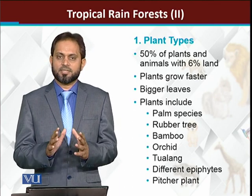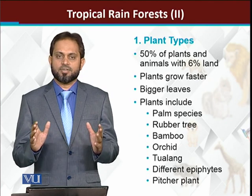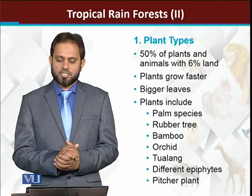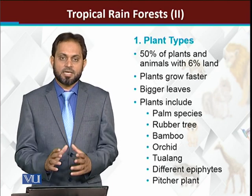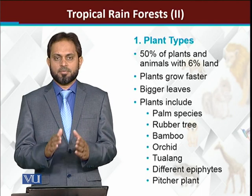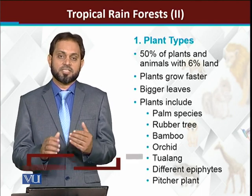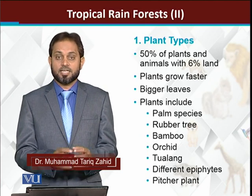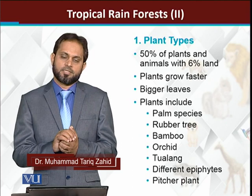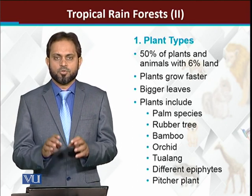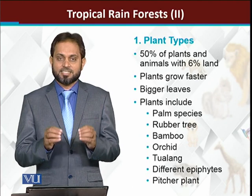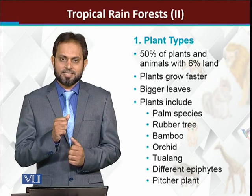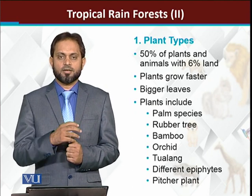Tropical rainforests are covering about 6% of land, yet more than 50% of the number of plants and animals are living in tropical rainforests. Tropical rainforests are the richest with reference to biodiversity. So now we are going to talk about different types of plants.